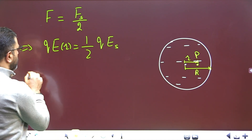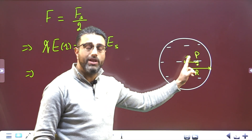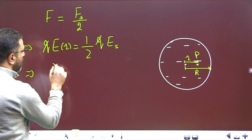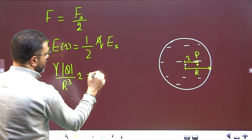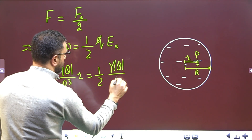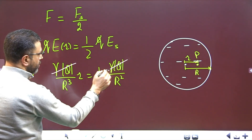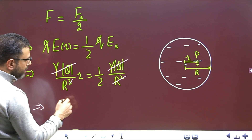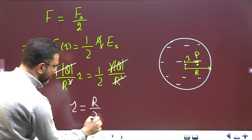Since the proton is inside the sphere, the field is γ|Q|/R³ × r. Setting this equal to half the surface field: γ|Q|/R³ × r = ½ × γ|Q|/R². Gamma and |Q| cancel. We get r/R³ = 1/(2R²), so little r = R/2.